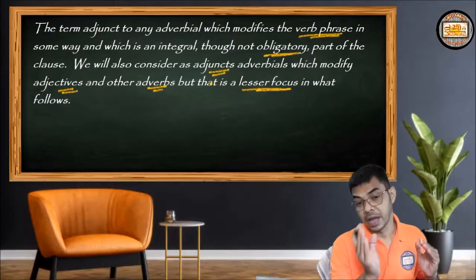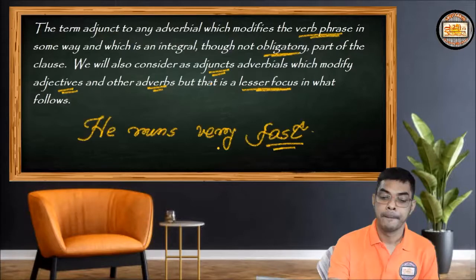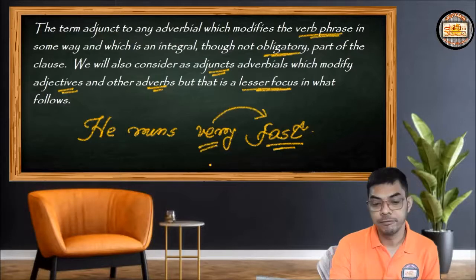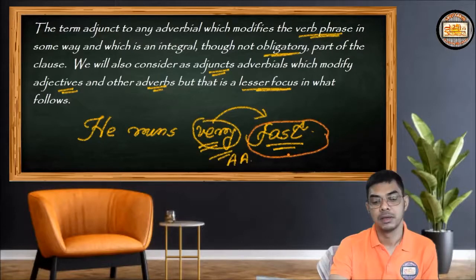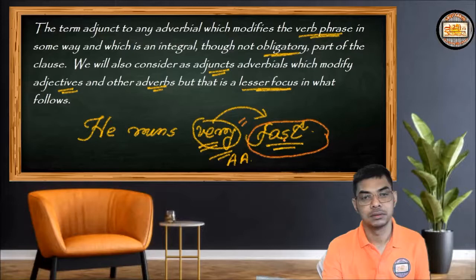For example: 'He runs very fast.' Here 'very' is qualifying 'fast,' so 'very' is an adjunct adverbial. Whether 'very' is there or not depends on the existence of 'fast' — if 'fast' isn't there, 'very' has no value. So the adjunct adverbial is in lesser focus than the adverb or adjective it qualifies or modifies.